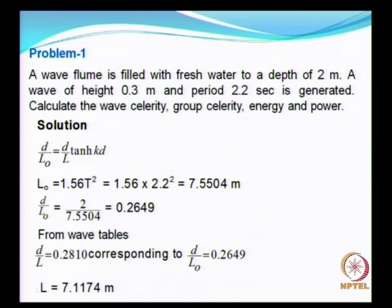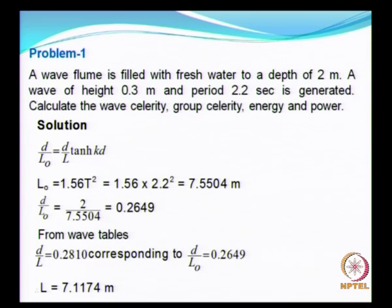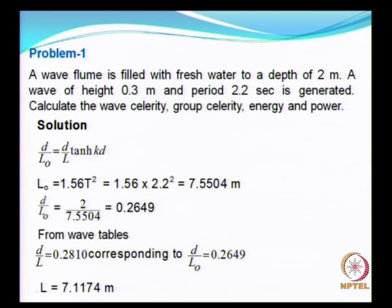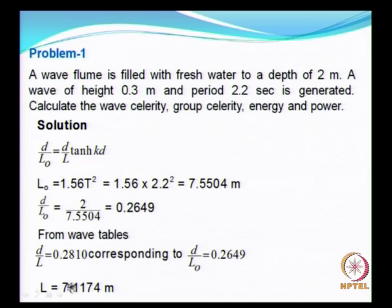We have already seen the wave tables, wherein we had different columns: one giving d/L₀, then d/L, then kd, 2kd, tanh(kd), 2h·sinh(kd), cosh(kd), etc. That table permits us to get the value of d/L corresponding to the value of d/L₀. I suggest you also refer to these tables, available in many standard reference books. The corresponding d/L is 0.281, and since the water depth is known as 2 meters, you can easily calculate the wave length, which is going to be 7.1 meters.